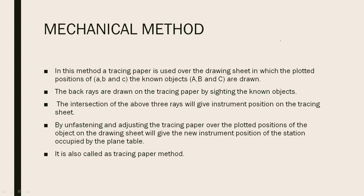When we use the mechanical method, we need to paste everything on the sheet. If you have experience, you can choose the appropriate method. Plot the point onto a drawing sheet, then plot the back-ray, and add the known object. Once it goes to the intersection, it will be added to the station. It will be done by the plane table — remove the clamp, adjust the station, and add the station.